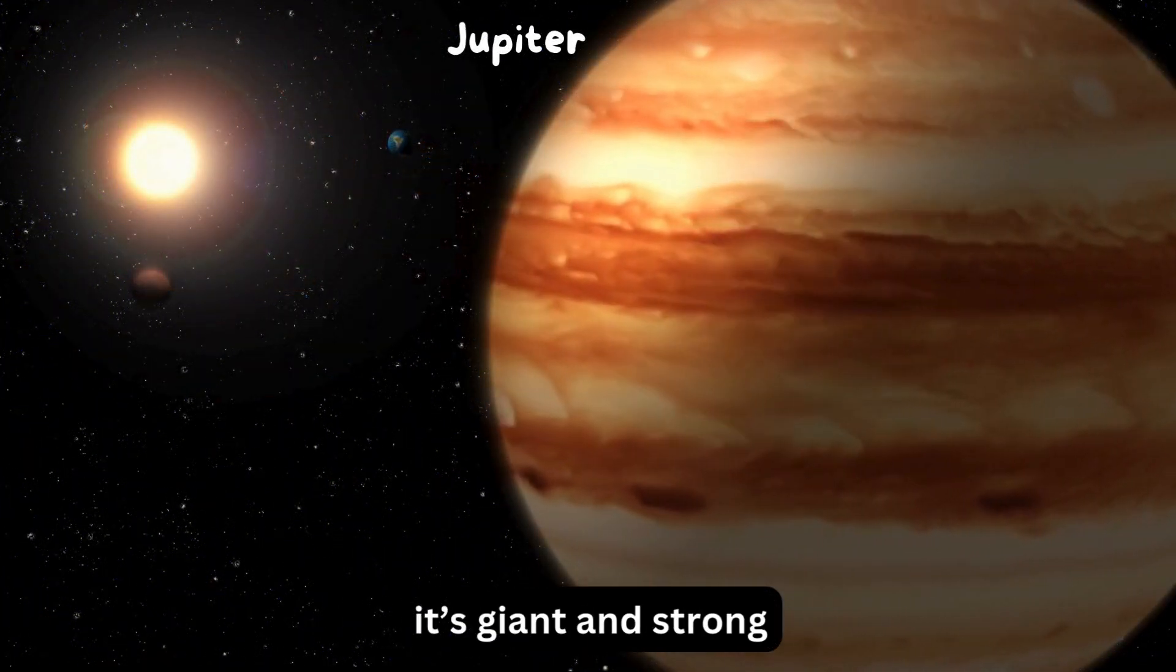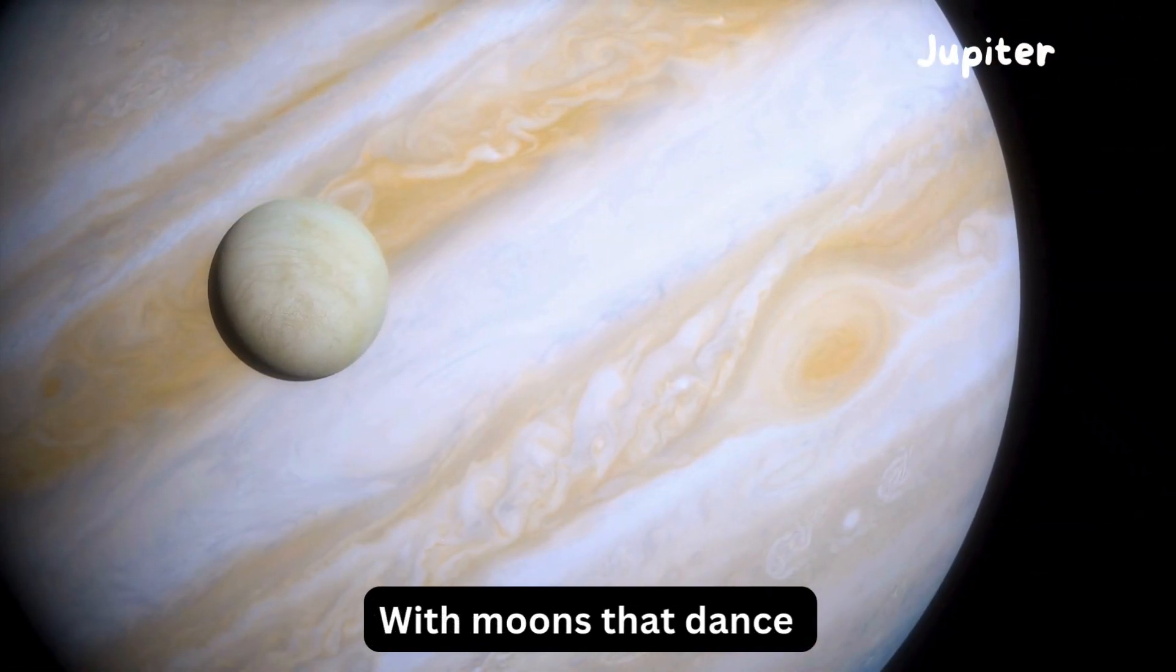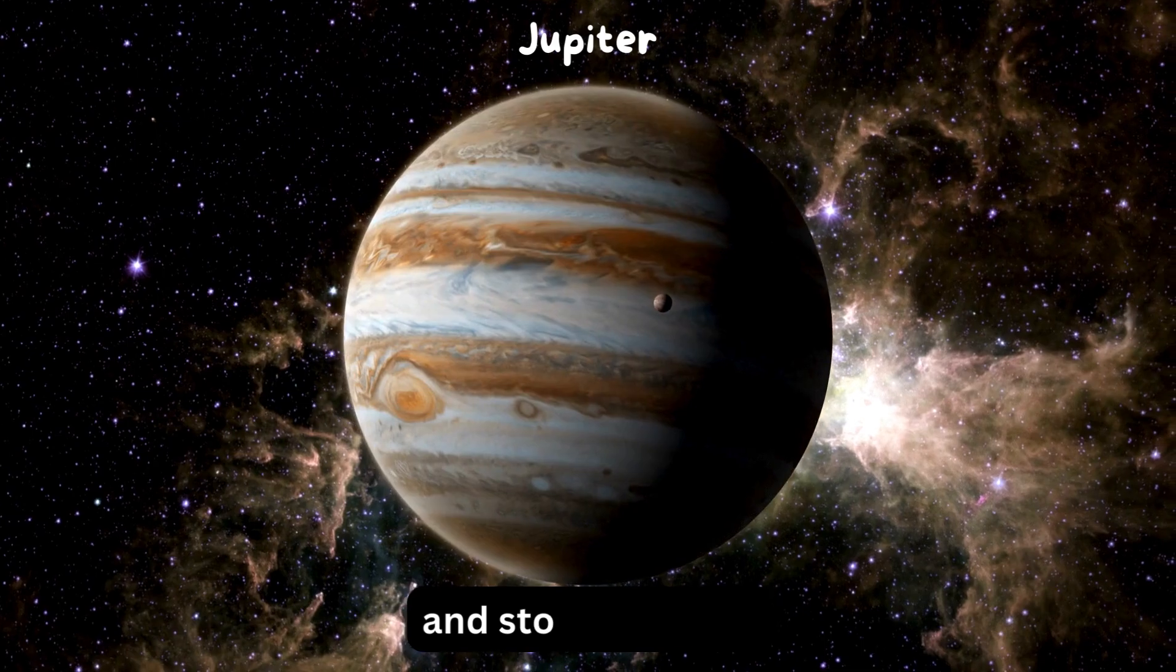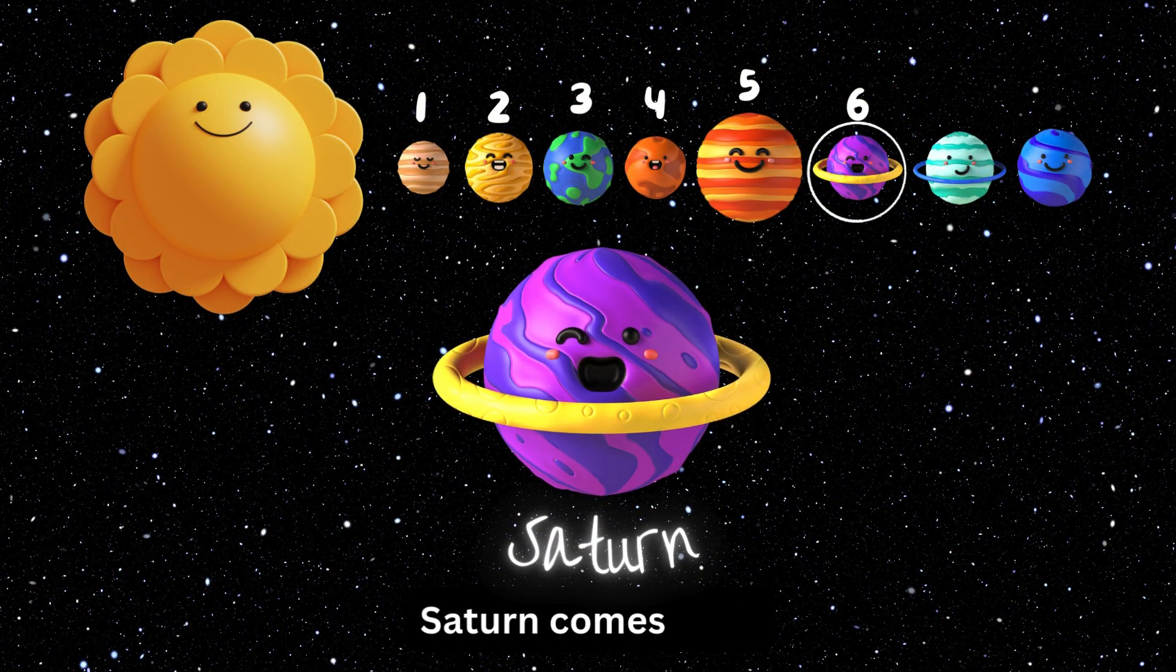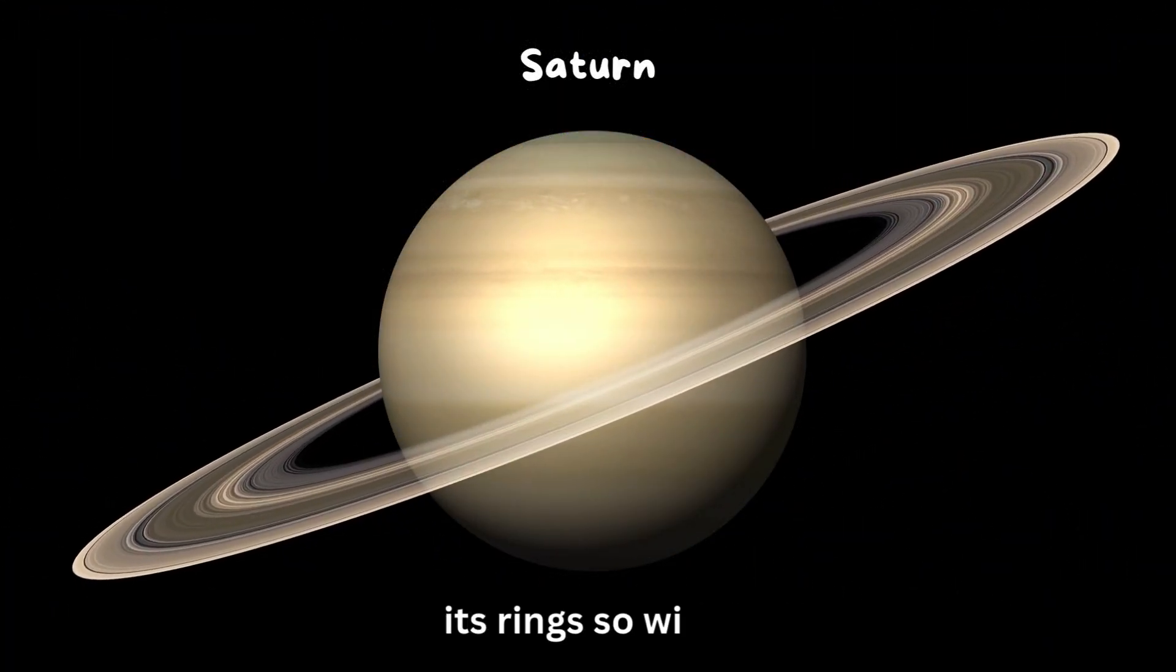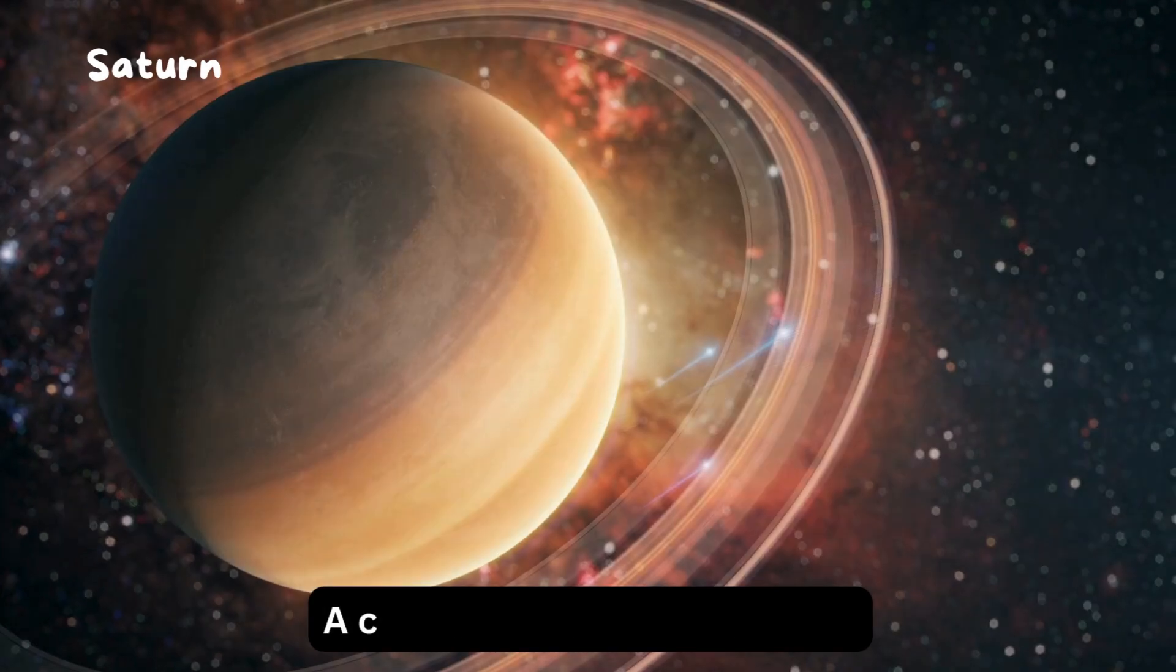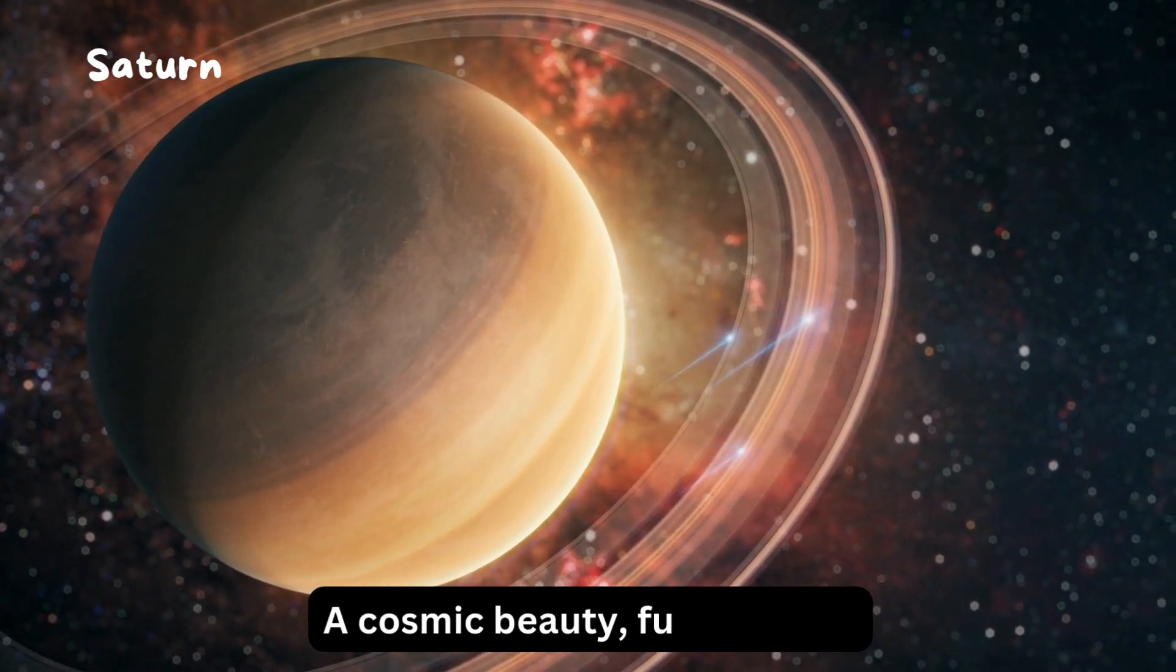Jupiter's fifth, it's giant and strong, with moons that dance and storms so long. Saturn comes sixth, its rings so wide.